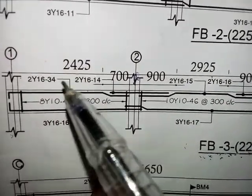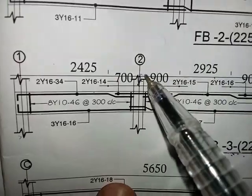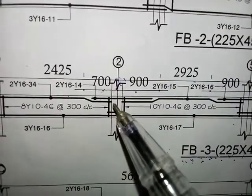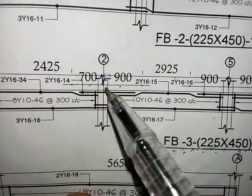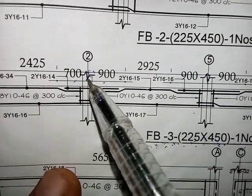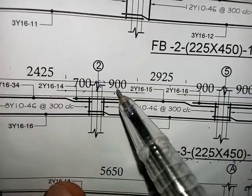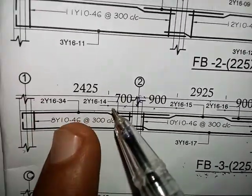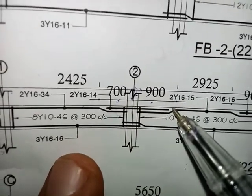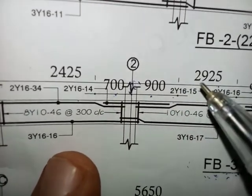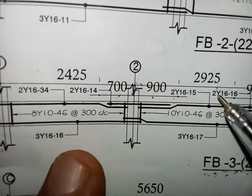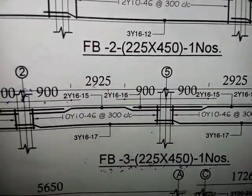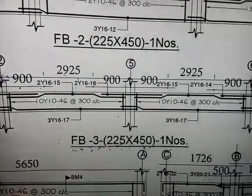This 900 and 700 means where the hogging moment is affected, or where the support moment reinforcement is to be considered — 700 at the 2425 span side, and 900 at the side of 2925. Thank you for watching this video. See you next time.